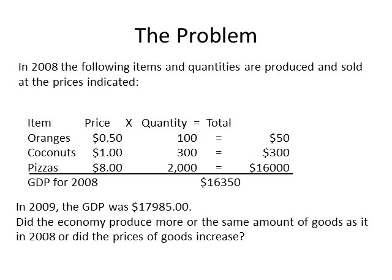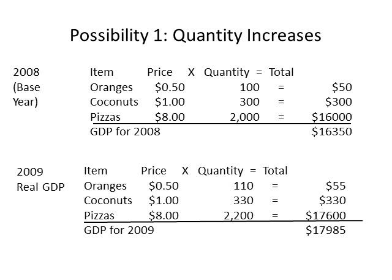The first scenario is that the quantity of goods produced has increased from 2008 to 2009. In 2008, oranges sell for $0.50 and 100 oranges are sold during the year, adding $50 to GDP. Coconuts sell for $1 each and 300 coconuts are sold during the year, adding $300 to GDP. Pizzas sell for $8, and 2,000 pizzas are sold during the year, adding $16,000 to GDP, for a total GDP of $16,350.